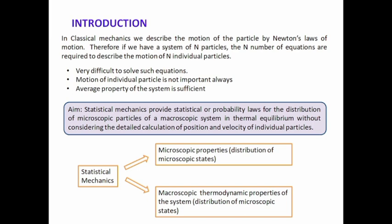We need to characterize a system by its pressure, temperature, or energy, and we have to calculate the average property of the system — and that is sufficient. Statistical mechanics is required for large numbers of particles, and it provides the statistical probability laws for the distribution of microscopic particles of a macroscopic system in thermal equilibrium, without considering the calculation of velocity of individual particles.